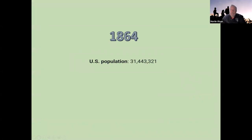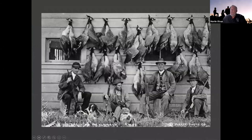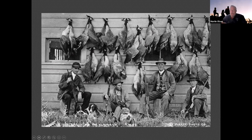Moving back to 1864 — the year Nevada first became a state — the U.S. population was 31,443,321. That number is important to keep in mind as we go through this presentation. Here are some early photos of hunters — some were more or less sport hunters, as you can tell by the way they're dressed. This photo was probably taken in the late teens or early 1920s based on the firearms. Keep in mind that during this time frame there wasn't great refrigeration.